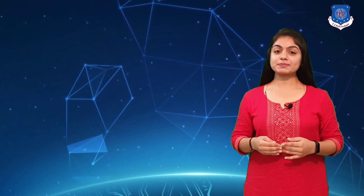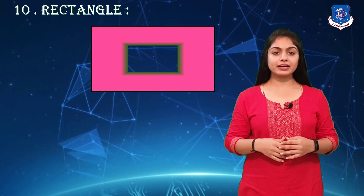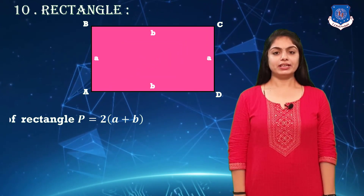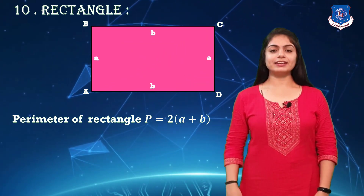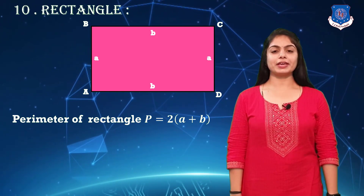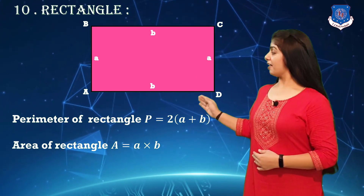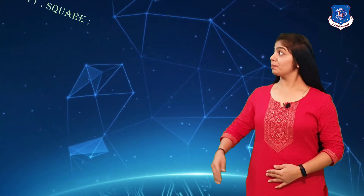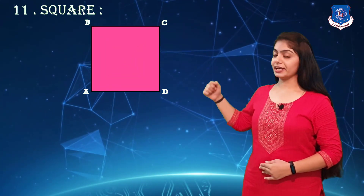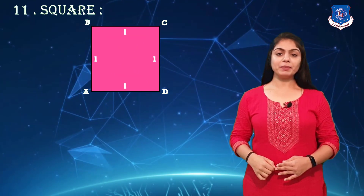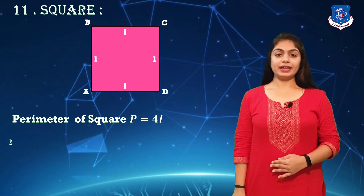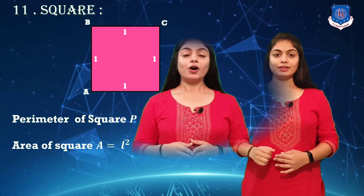Our next plane figure is the rectangle and square. In a rectangle, opposite sides are equal. For the square, all four sides are equal, so the perimeter of a square is 4L and the area of a square is L².